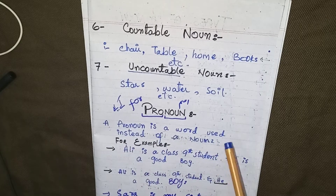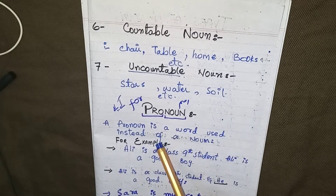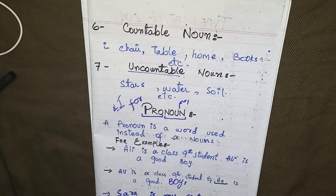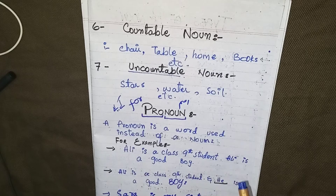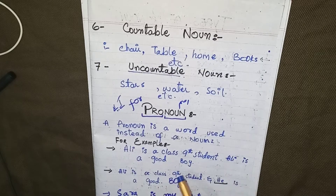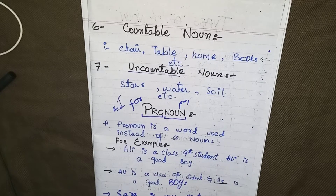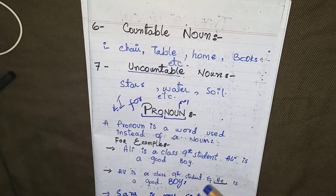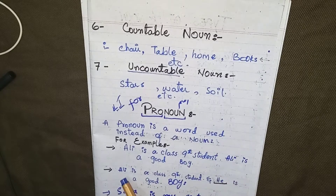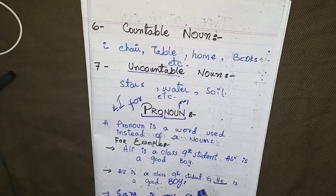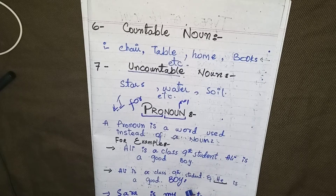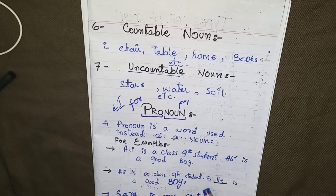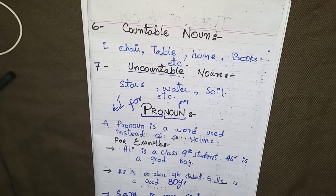A pronoun is used in place of a noun. For example: 'Ali is a class ninth student. Ali is a good boy.' It is better to avoid repetition of the name Ali again and again, so we say: 'Ali is a class ninth student and he is a good boy.' Here 'he' is a pronoun.